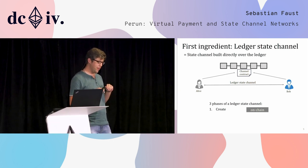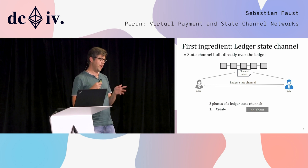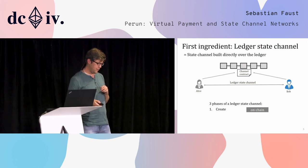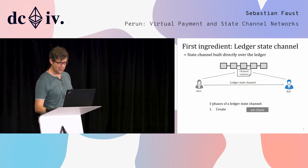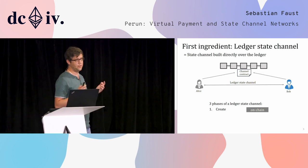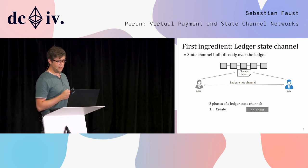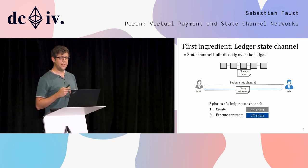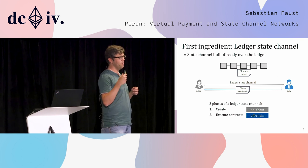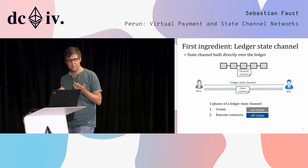In the first phase, Alice and Bob have to go to the blockchain and create the ledger state channel. This happens with some cryptography — signatures are exchanged and so on. The parties send something to the blockchain and deploy a channel contract, which will later be used potentially if there are disagreements. Once the ledger state channel has been established, the parties can then execute contracts off-chain. They can run multiple executions of a chess game without ever touching the blockchain.